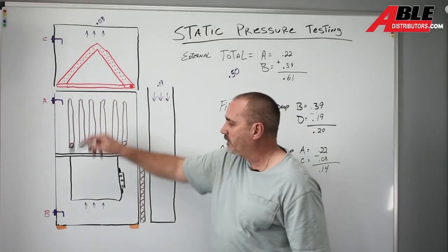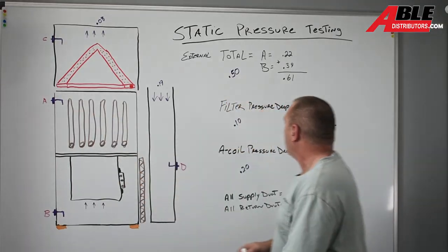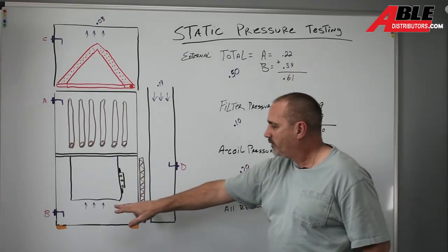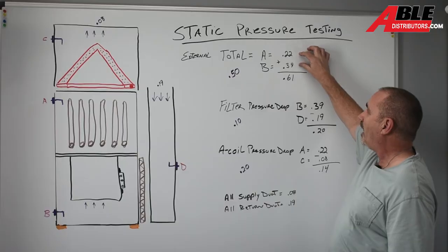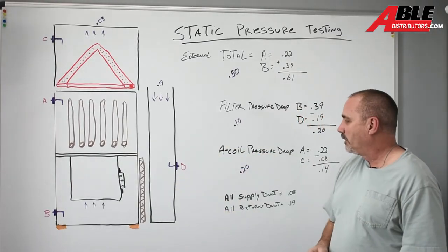So when you do these numbers, you can instantly tell where to look. Instantly with this being a 0.22 and this one being a 0.39, I knew the issues were going to be on the return. It's the higher number, it's an easy way to go.